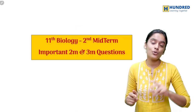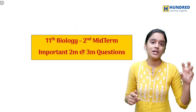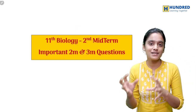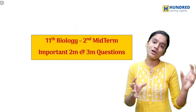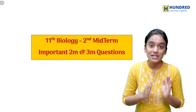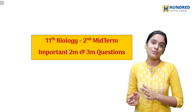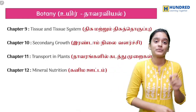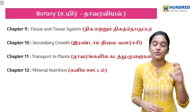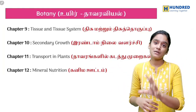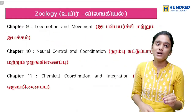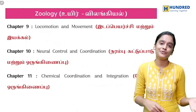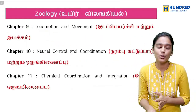So what are we going to talk about in this video? Study plan and how to study — specifically important 2-mark and 3-mark questions from your Botany and Zoology. In Botany, these are the chapters, and in Zoology, these are the chapters: 3 chapters from Zoology and 4 chapters from Botany.